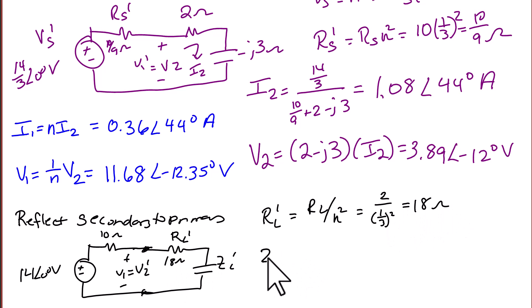ZL prime is ZL over N squared, which is negative J3 over 1 third squared, which equals negative J27 ohms. And now, just like before, we are going to find the loop current, which is I1, and also I2 prime.